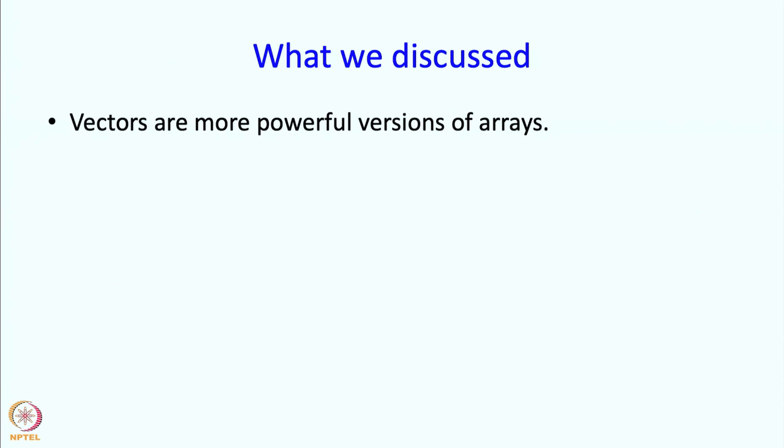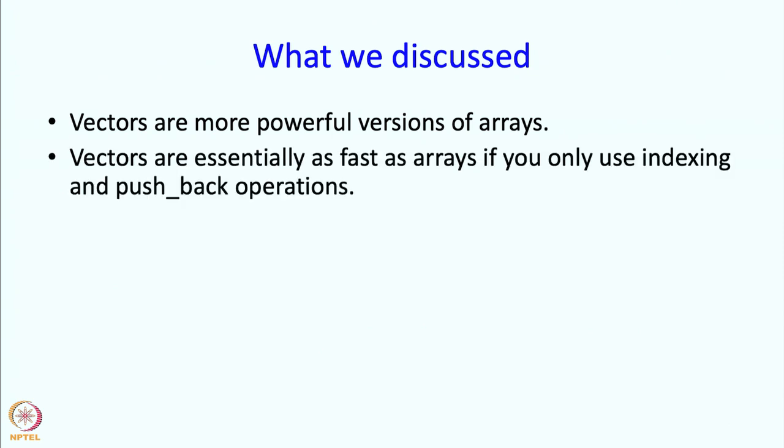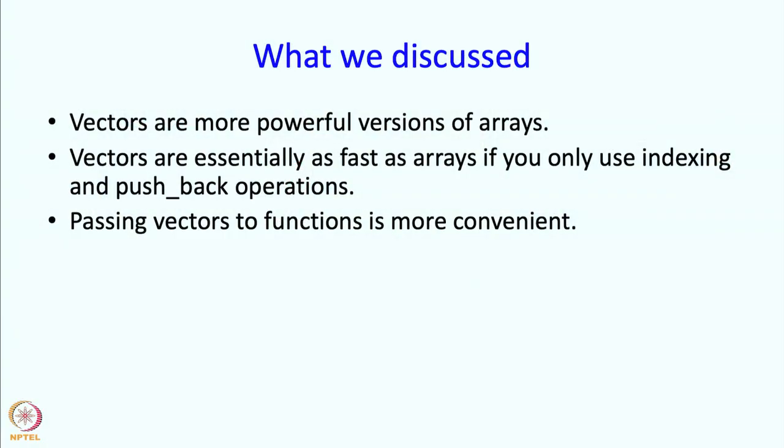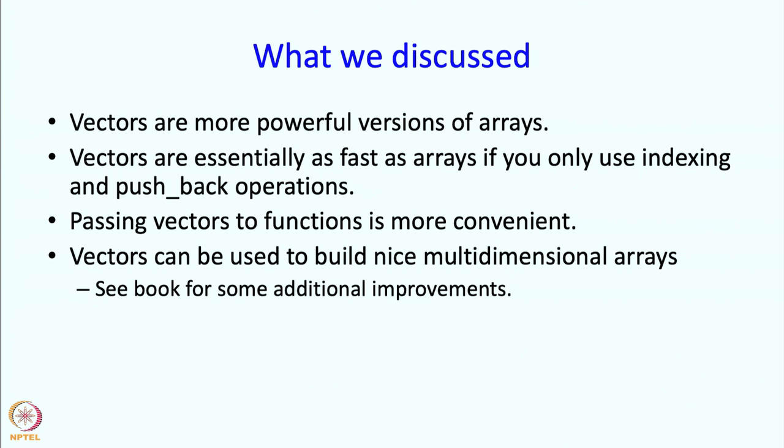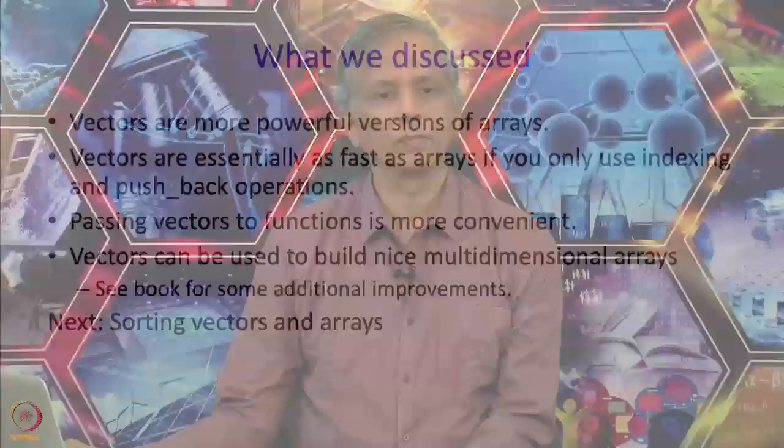So what have we discussed in this segment? We have discussed vectors which are a more powerful version of arrays. Vectors are essentially as fast as arrays if you only use indexing and pushback operations. If you insert in the middle, then things get slowed down, but with just these 2 operations, they are practically arrays. Passing vectors to functions is more convenient because you do not have to specify the length. You can get by doing v.size. Then vectors can be used to build nice multi-dimensional arrays. In particular, you should be able to write matrix multiplication operations or all kinds of matrix operations for all matrix sizes. This is the end of this segment and in the next segment, I am going to talk about sorting vectors and arrays.